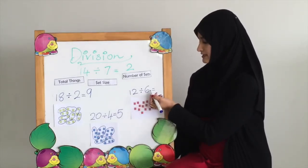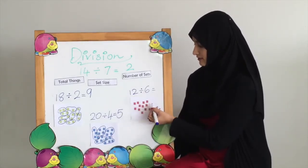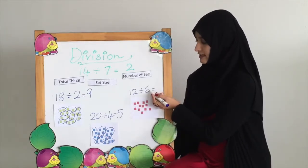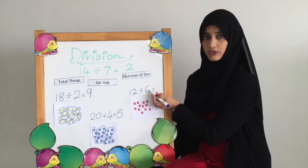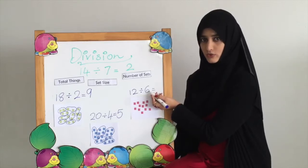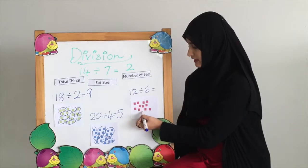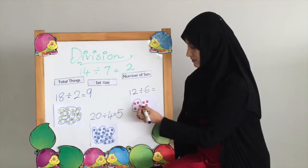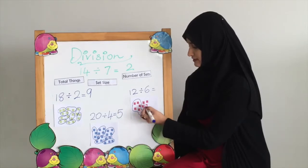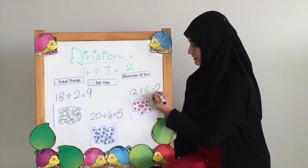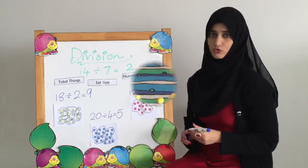12 divided by 6. We have 12 squares. The set size is 6, so we are going to count 6 squares and make a set: 1, 2, 3, 4, 5, 6. The answer is 2 because we have 2 sets here. 12 divided by 6 equals 2.